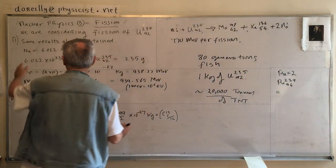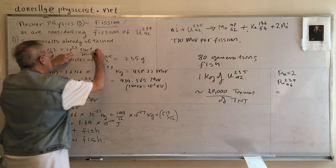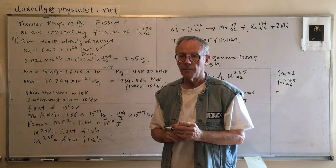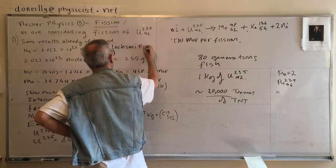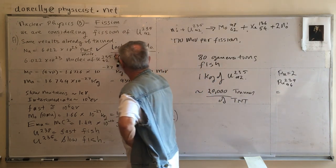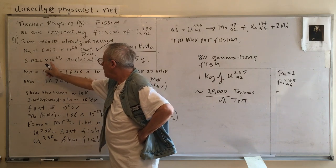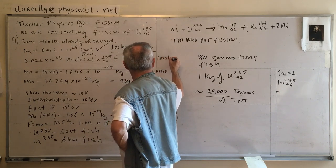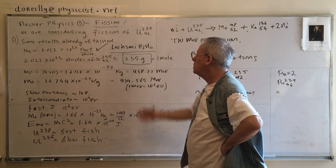Let's figure this out. Avogadro's number — 6.022×10²³ — is one of the greatest advancements of all time. I don't think Avogadro actually discovered it; I think a fellow called Loschmidt discovered it, so we also call it Loschmidt's number. That means Avogadro's number of nuclei of U-235-92 weighs 235 grams — that's one mole of U-235.